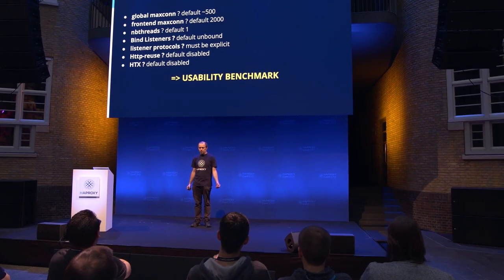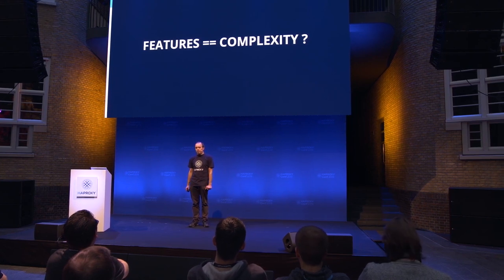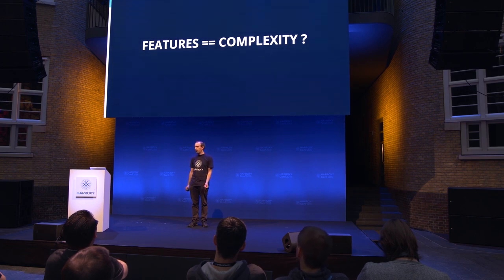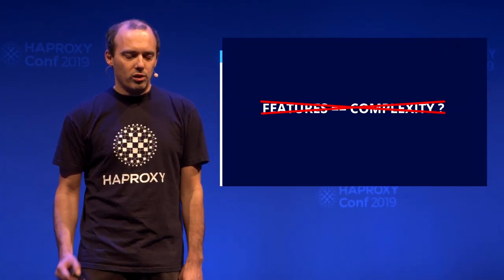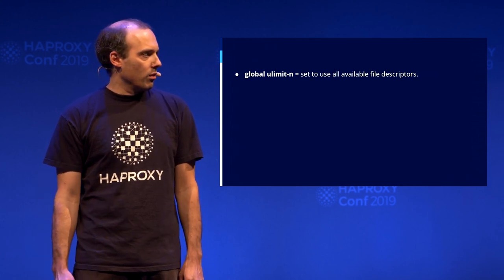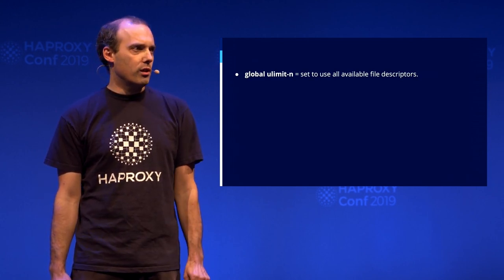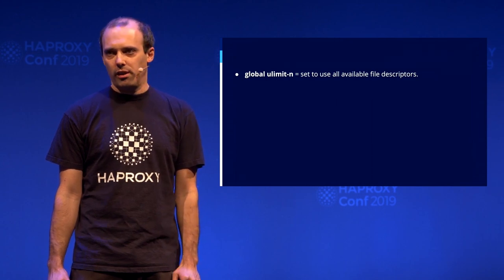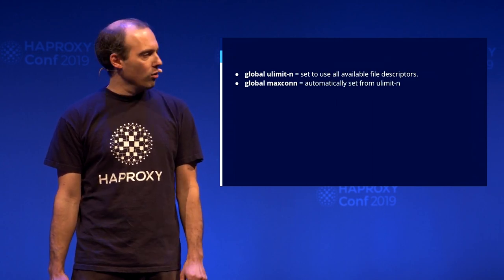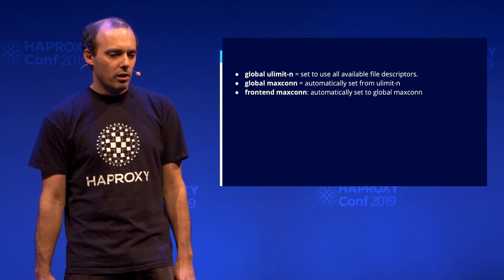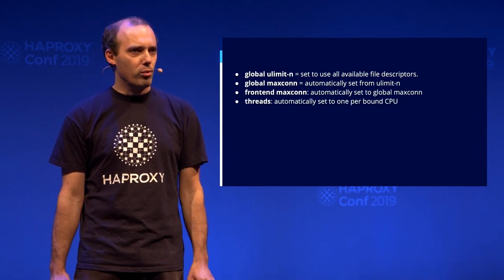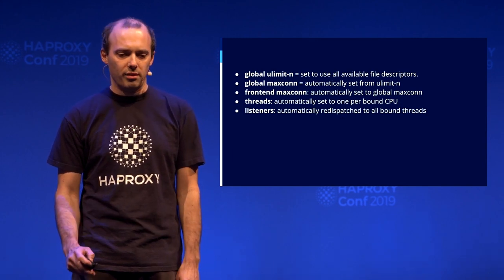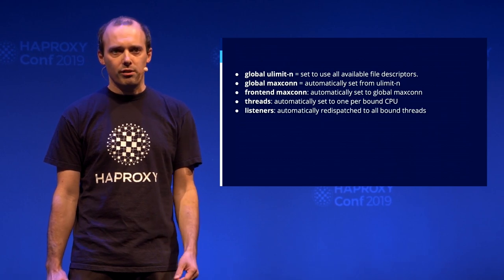So what could be done? In my opinion, the large number of features we support cannot be a valid excuse for having increased complexity. So in 2.0, we wanted to address all of these issues. We have changed the way a number of default settings used to work for almost 18 years. The global ULimit is now set by default to what is allowed to the process. Maxconn is derived automatically from ULimit.